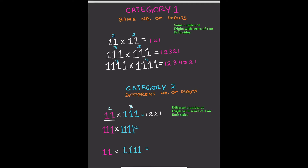So to recap: two digits on the first number, three on the second — choose the lower digit count, which is 2. Increase from 1 to 2: that's 1, 2. The difference is 3 minus 2 equals 1, so repeat the last digit once more, giving a second 2. Then decrease back to 1. The answer is 1, 2, 2, 1.